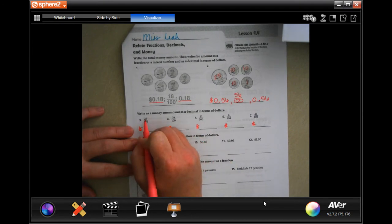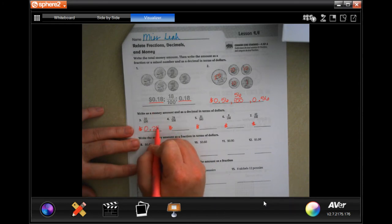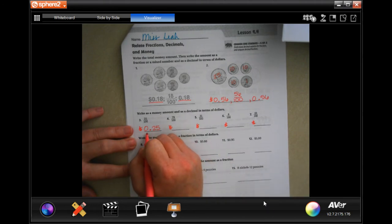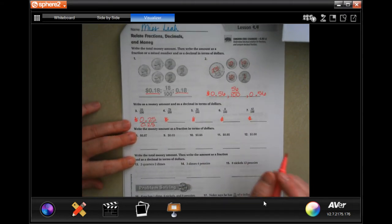So, this one doesn't have a whole number, so it's going to start with a zero. Then we have 25 and it's over another. So we're good. Now, the decimal amount is still 0.25. Done.